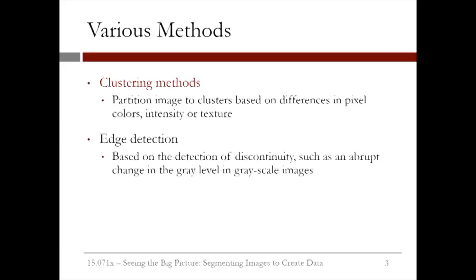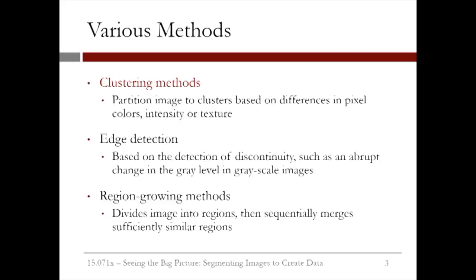Another technique is edge detection, which is based on detecting discontinuities or boundaries. For instance, in a grayscale image, a boundary would correspond to an abrupt change in the gray level. Instead of finding boundaries of regions in the image, there are other techniques called region-growing methods, which start by dividing the image into small regions and then sequentially merge these regions together if they are sufficiently similar.